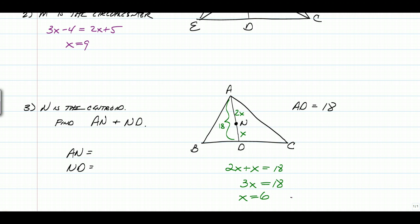Now that we know X is equal to 6, we can substitute it back in. 2 times 6 is 12, and X is just 6, so we have AN is 12 and ND is 6. And there you have it. That's what a centroid does.